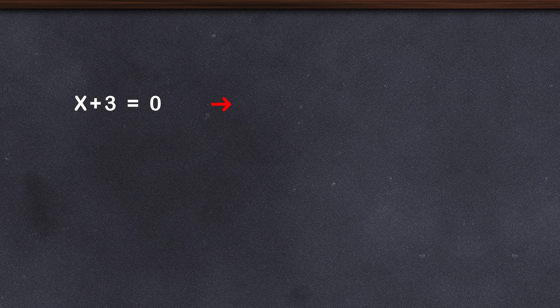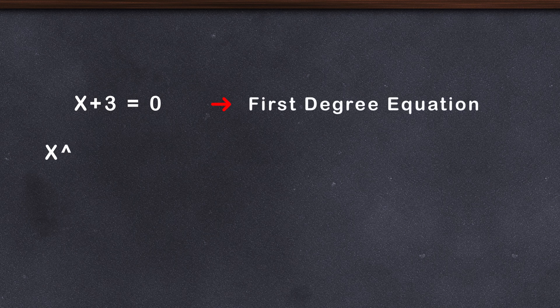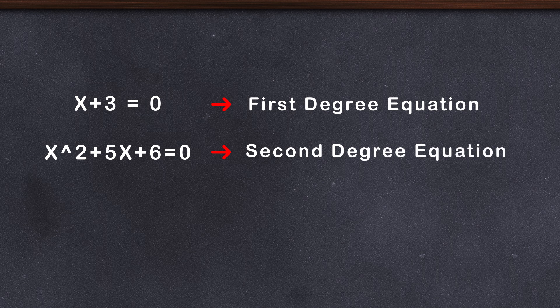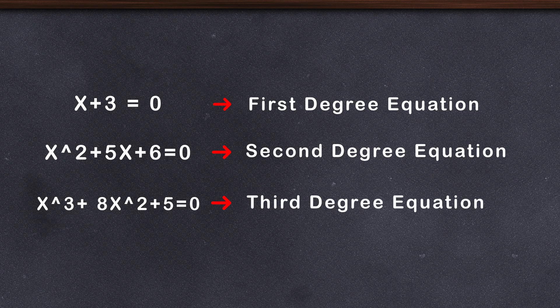x + 3 = 0 is a first degree equation. x² + 5x + 6 = 0 is a second degree equation. x³ + 8x² + 5 = 0 is a third degree equation.